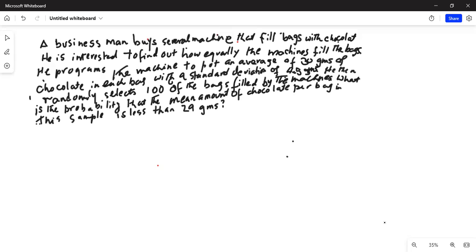He programs the machine to put an average of 30 grams of chocolate in each bag with a standard deviation of 4.5 grams. He then randomly selects 100 of the bags filled by the machines. What is the probability that the mean amount of chocolate per bag in this sample is less than 29 grams?